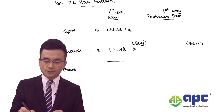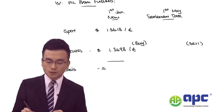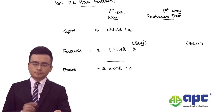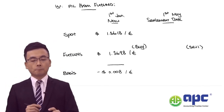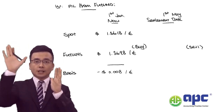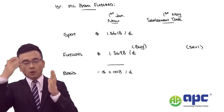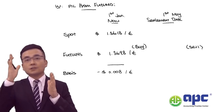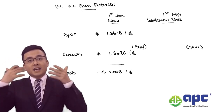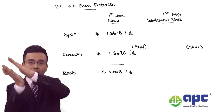The basis of 1.3618 minus 1.3698 is minus $0.008 per euro. Now the futures price is where we estimate what the future price will be at some point in the future. However, when it reaches 1st May or even 31st May, it's no longer a future — the futures price actually becomes the actual price. So at some point in the future, the futures price will be the same as the actual (spot) price.